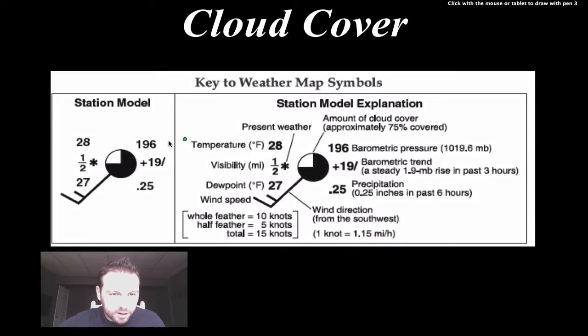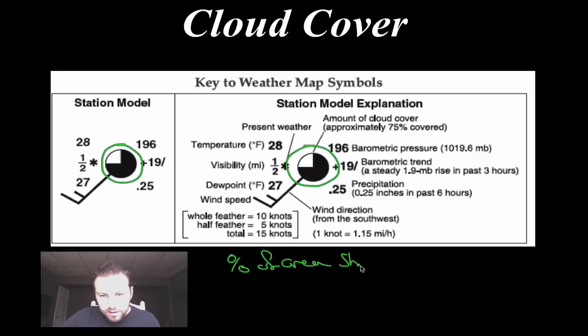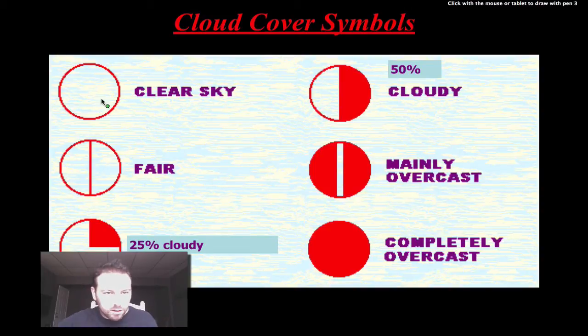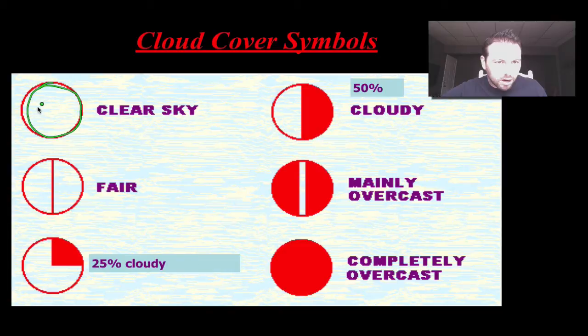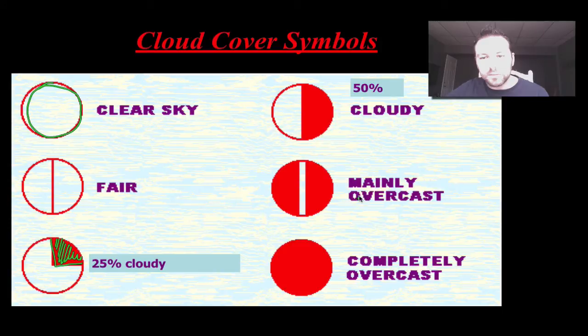The first thing we're going to look at is our cloud cover. Our cloud cover is going to be represented on the main body of the station model right here. And it's basically the percent of it, the area shaded in, is going to equal our percent cloud cover. So it's pretty easy. And it's probably one of the easier things on our station model to look at. Here you can see what clear skies might look like. So you can see here, the main body of our station model is completely open. Fair, just the one line through means we have an occasional passing cloud coming through. 25% cloudy. Notice we have one-fourth or a quarter or 25% of our body shaded in. And going through cloudy, mainly overcast, and then completely overcast where 100% is shaded in.